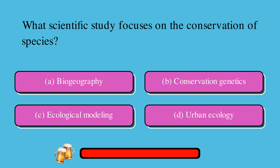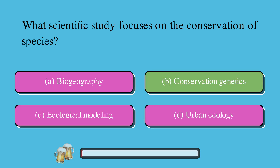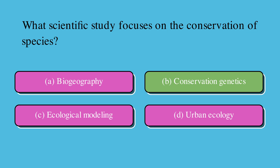What scientific study focuses on the conservation of species? A. Biogeography, B. Conservation genetics, C. Ecological modeling, or D. Urban ecology? The correct answer is B. Conservation genetics.